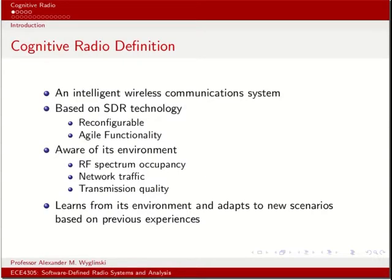So what is cognitive radio? There are a variety of different definitions, which we'll look at in a few minutes. But in a nutshell, a cognitive radio is an intelligent wireless communication system. There's more than just intelligence behind this type of wireless device. It's often based on things such as software-defined radio technology, but it's not exclusively a software-defined radio. You could have cognitive radios based on more conventional radio hardware, but software-defined radio lends itself nicely to cognitive radio because of its reconfigurability and agile functionality attributes.